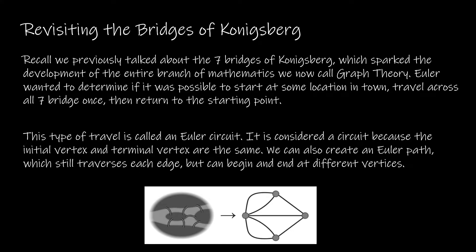Recall when we began this chapter — chapter 10 — we looked at the Bridges of Königsberg problem. In that problem, we had two sides of two landmasses separated by a river, and we also had two islands. There are a total of seven bridges connecting the landmasses and the islands. Euler took that and turned it into a graph, which made it easier to deal with. What we're actually trying to do — starting and ending at the same point and going over each edge — is find something called an Euler circuit.